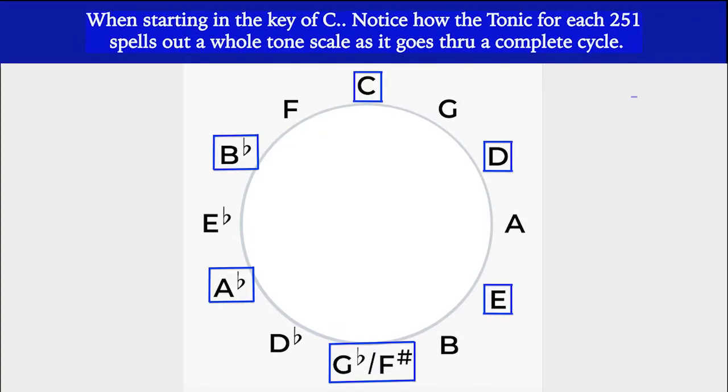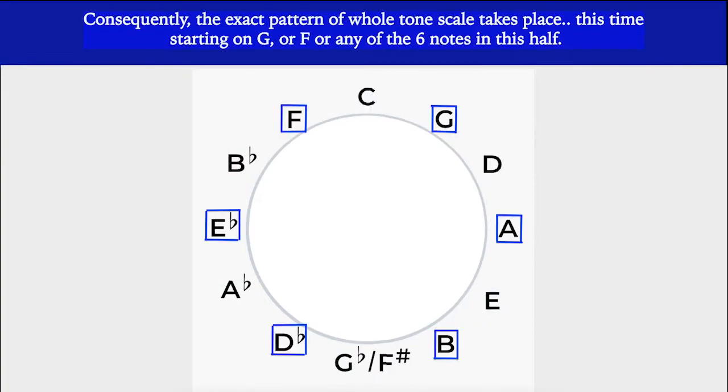In other words, a 2-5-1 in the key of C incorporates D, G, and C. One can visually see the sequence that takes 25% of the circle. This 2-5-1 of B flat allows us to see the circle as a continuous cycle of this renowned chord progression. When starting in the key of C, notice how the tonic for each 2-5-1 spells out a whole tone scale as it goes through a complete cycle. Consequently, the exact pattern of the whole tone scale takes place, this time starting on G, or F, or any of the six notes in this half.